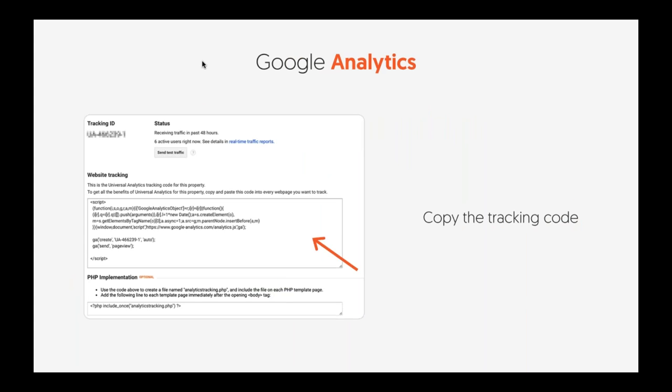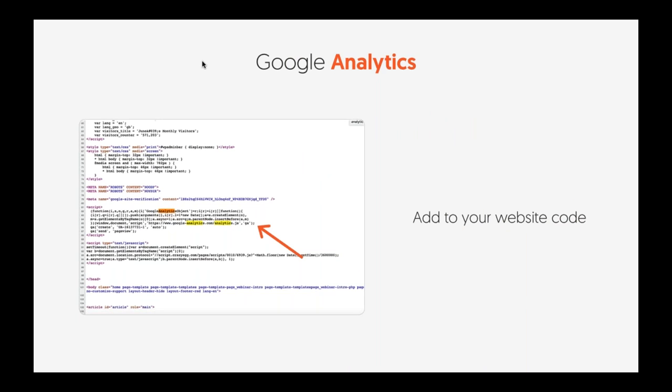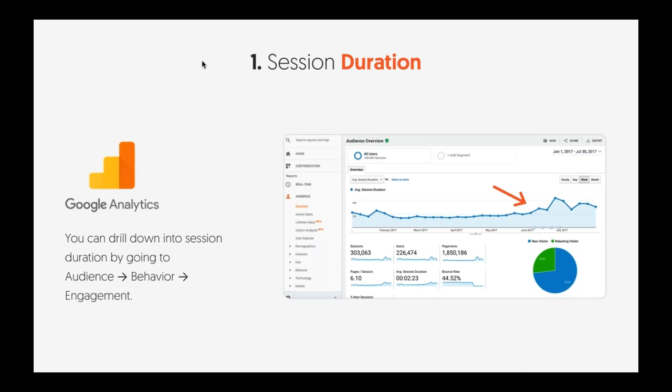First, sign up for Google Analytics. Second, put the tracking code on your website. I'm assuming most of you guys already have this. Once it's on your website, if you struggle with this, just let us know. Keep in mind it can take like half a day or a day for it to update right when you put the script on, and then you should start seeing traffic.